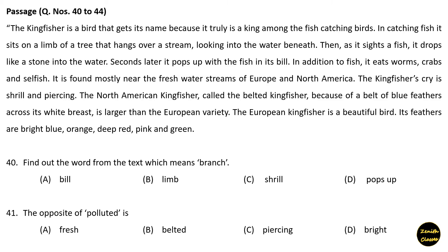Next we have a passage. Questions number 42 to 44. Passage: The kingfisher is a bird that gets its name because it truly is a king among the fish-catching birds. In catching fish, it sits on a limb of a tree that hangs over a stream, looking into the water beneath. Then, as it sights a fish, it drops like a stone into the water; seconds later it pops up with the fish in its bill.